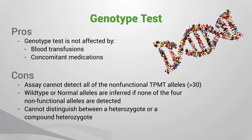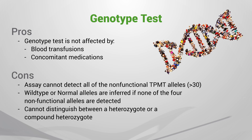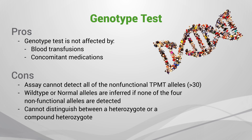The limitation of the genotype test is that the assay is not designed to detect all of the TPMT alleles, and there are more than 30 TPMT alleles that have been identified. The assay cannot distinguish between a heterozygous patient with one wild type and one abnormal allele from a compound heterozygous patient with a different mutation on each allele. In addition, the wild type or normal allele is inferred if none of the four non-functional alleles are detected.